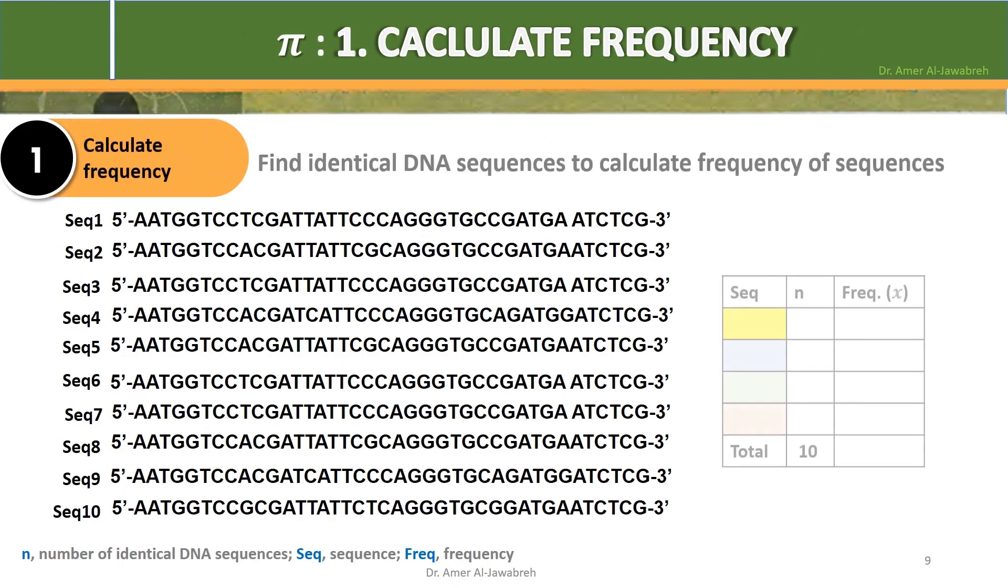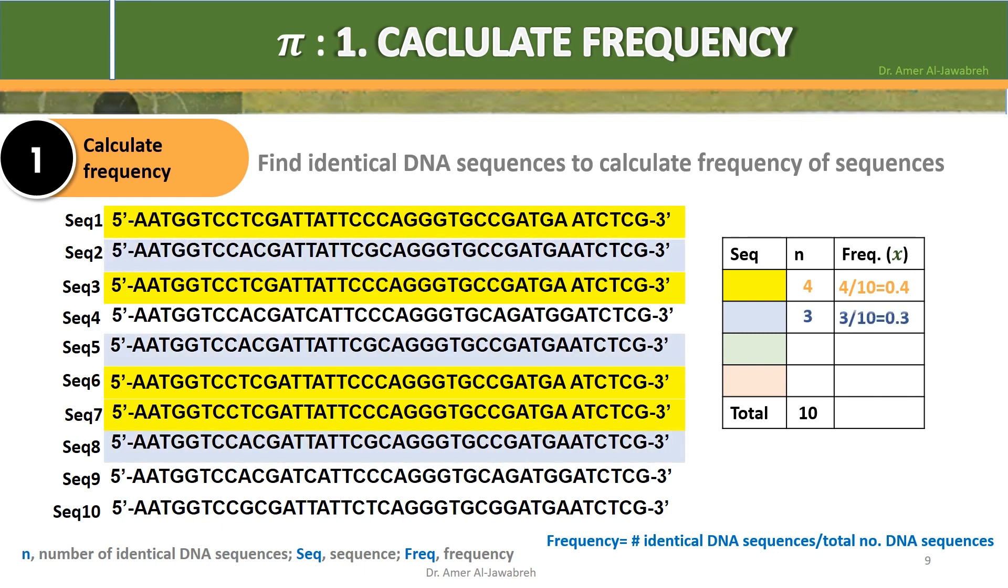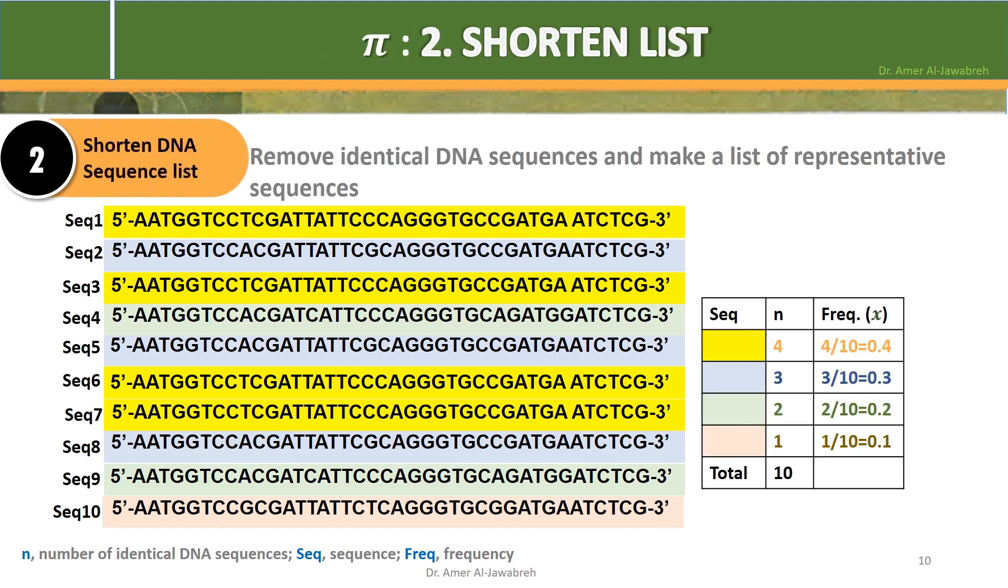Step 1: Calculate frequency, which is number of identical DNA sequences over total number of DNA sequences. Using color code for clarification: Sequences 1, 3, 6 and 7 are identical, giving an X of 0.4. Sequences 2, 5 and 8 are identical with an X of 0.3. Sequences 4 and 9 are identical with an X of 0.2. Sequence 10 is unique with an X of 0.1. Step 2: Shorten list. Remove identical DNA sequences and make a list of representative sequences.